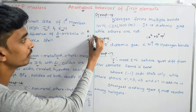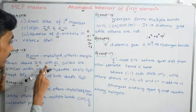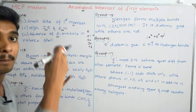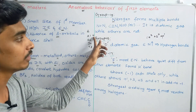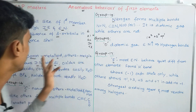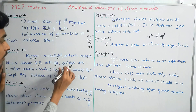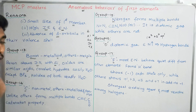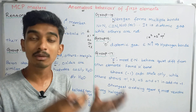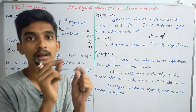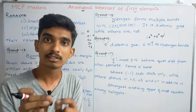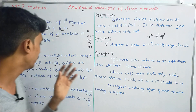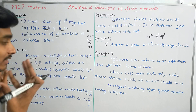In the diagonal relationship, Boron is diagonally opposite to Silicon in Group 14 and they share similar properties. For example, Boron oxide and Silicon oxide are similar in nature — both are acidic. They also form corresponding hydrates and are easily hydrolyzed.